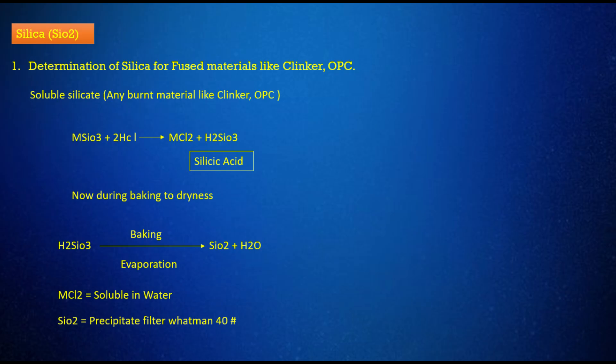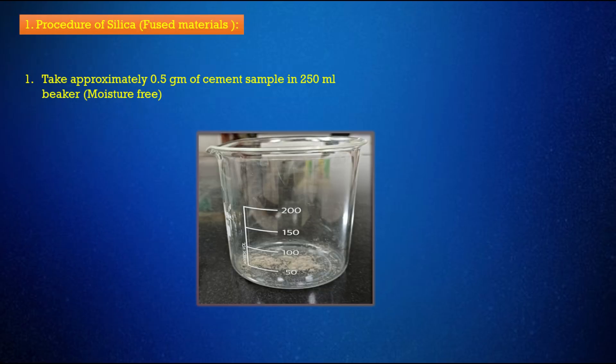Determination of silica for fused materials like clinker and ordinary Portland cement. Also applicable for soluble silicate and any burnt material like clinker or ordinary Portland cement. Procedure of silica for fused materials.